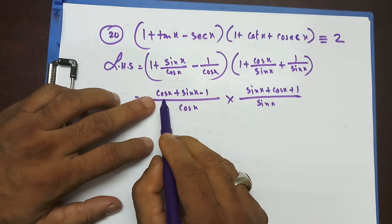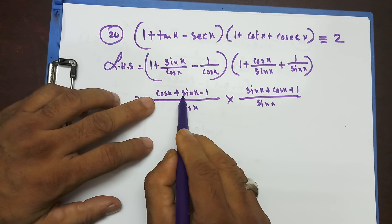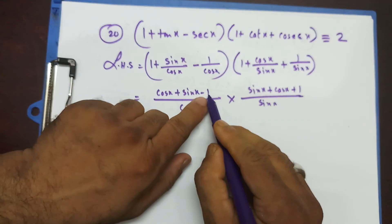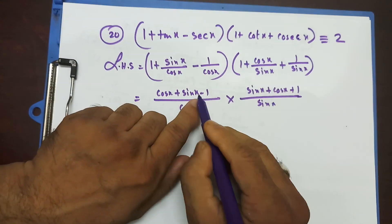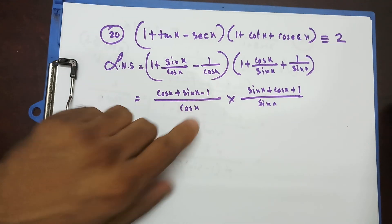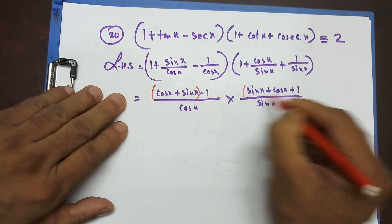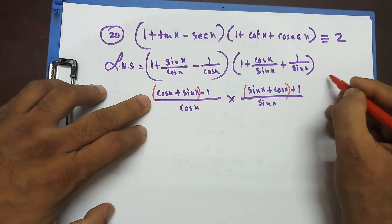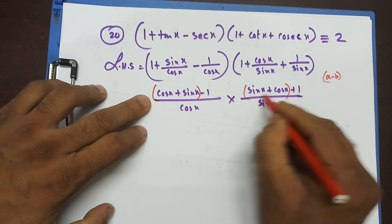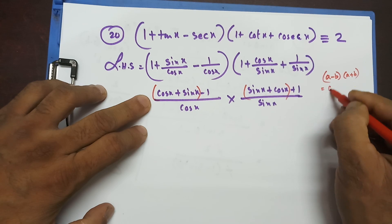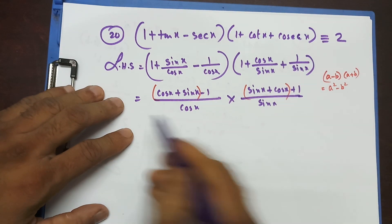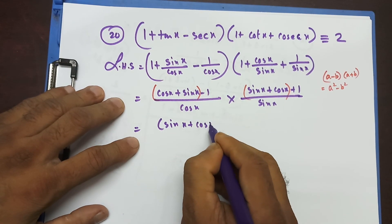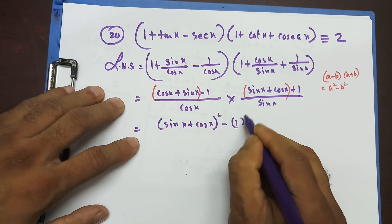What I'm going to do — I see that cosx plus sinx appears in the first bracket, and sinx plus cosx appears in the second. These two terms are the same, but the signs are different: negative here, positive here. So what if I put this one in brackets as A minus B and this one as A plus B? That leads me to A² minus B². So I write (sinx + cosx)² minus 1², over sinx·cosx.